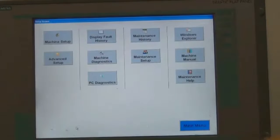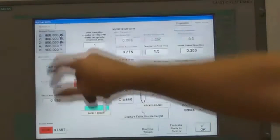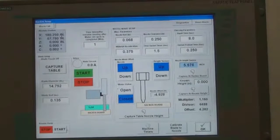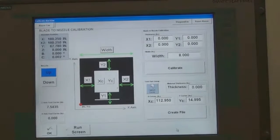From the main menu, press the Setup button. On the Setup screen, press the Machine Setup button. On the Machine Setup screen, press Calibrate Blade to Nozzle button.